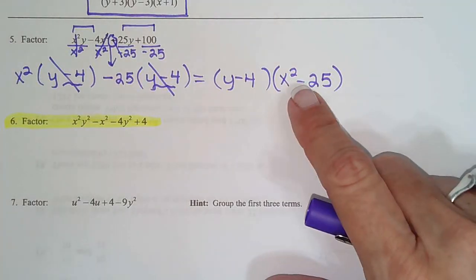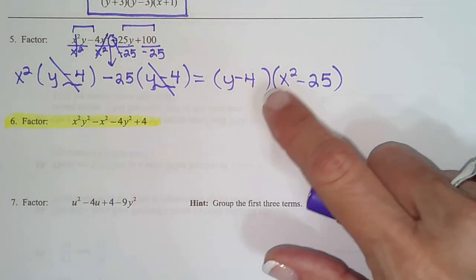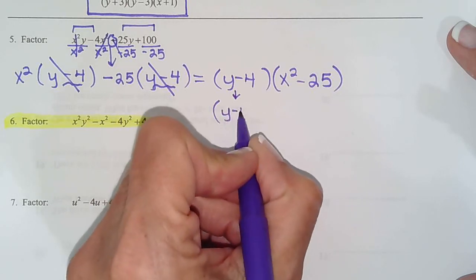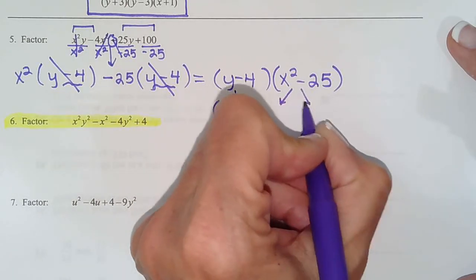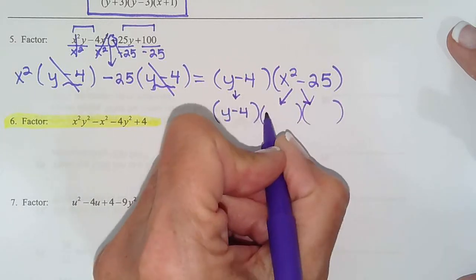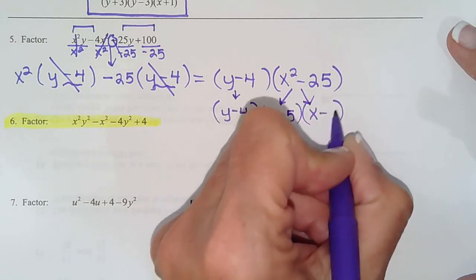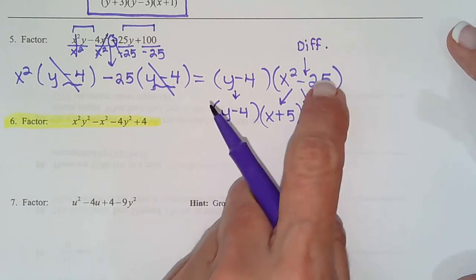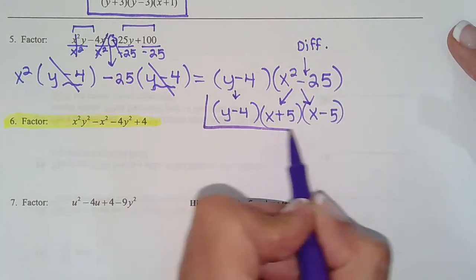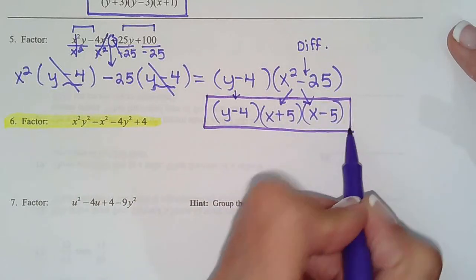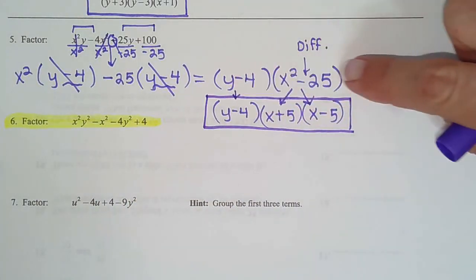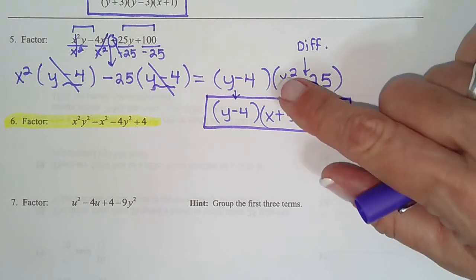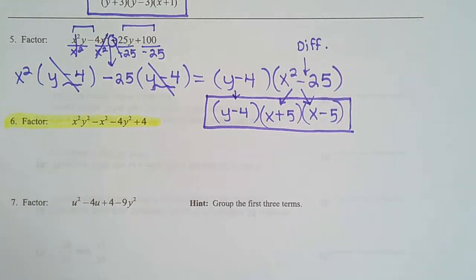And do I circle it? No, because we have a difference of squares. So y minus 4 is not a difference of squares. This doesn't have an even exponent, so it just comes down as is. x squared minus 25 comes down as x plus 5, x minus 5, because this says the signs are different. And the square root of x squared is x. The square root of 25 is 5.